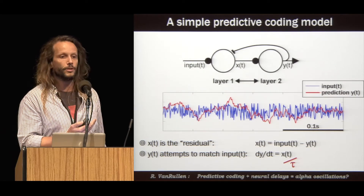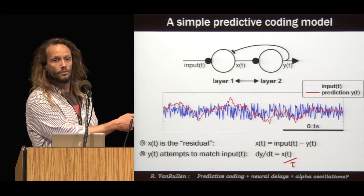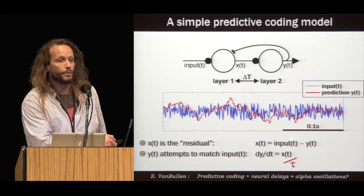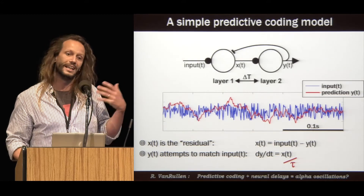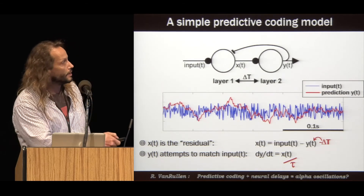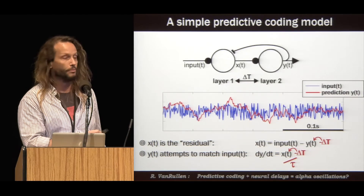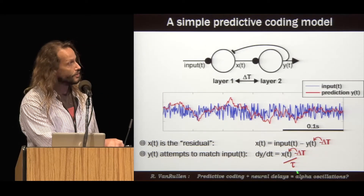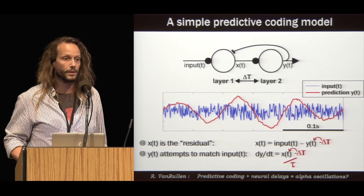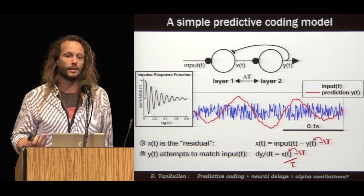Perhaps most importantly, different brain regions do not exchange information instantaneously — it takes on the order of 10–15 milliseconds for spikes to travel along axons from one region to the next. If we call this communication delay delta T, then the residual X cannot compare the input at time T with the prediction at time T, because the latest prediction available is the one made at T minus delta T. Similarly, the prediction cannot be updated based on the current residual but only on the residual at T minus delta T. Injecting this parameter delta T into the model, the prediction no longer tracks the input but instead oscillates with a period of about 100 milliseconds. Looking at the cross-correlation between input and prediction — lo and behold — it oscillates at 10 hertz, just like our EEG impulse response functions.